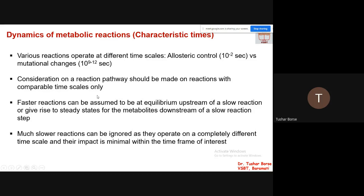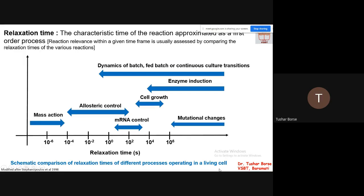With a graph I will try to show you. These are some of the characteristic times for different types of mechanisms or phenomena which occur in the cell — studied in E. coli, which is the prokaryotic system. For cell growth — that is, whatever activities are required for that particular cell — it requires a characteristic time which could be between 10³ to 10⁵ seconds.